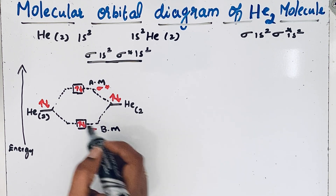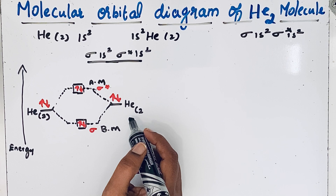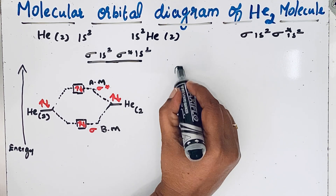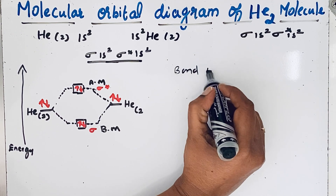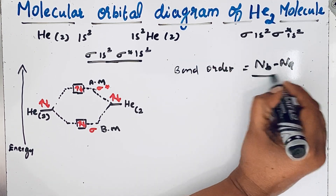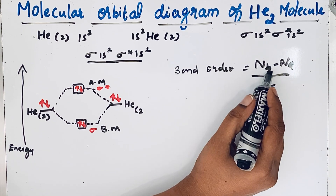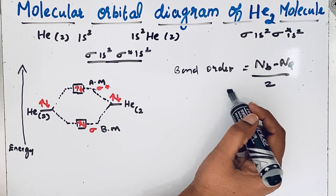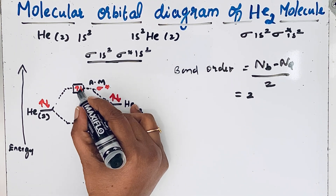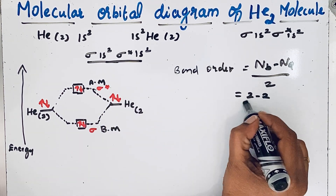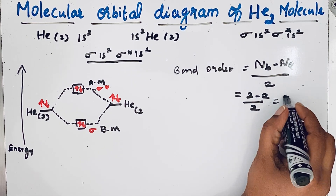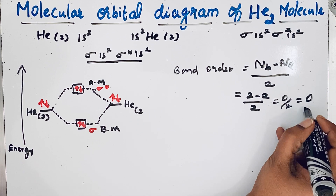Using this molecular orbital diagram, we can find the bond order for the molecule. The bond order formula is (Nb minus Na) divided by 2, where Nb is the number of bonding electrons and Na is the number of antibonding electrons. So the number of bonding electrons is 2 and the number of antibonding electrons is also 2, giving (2 minus 2) divided by 2, which equals 0.